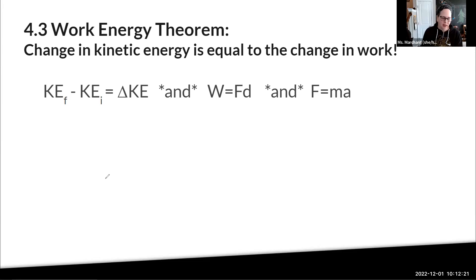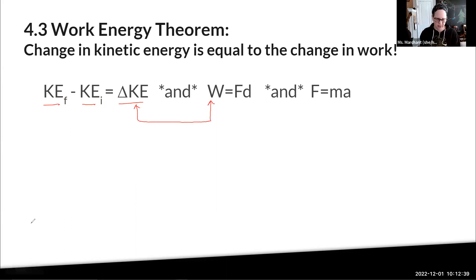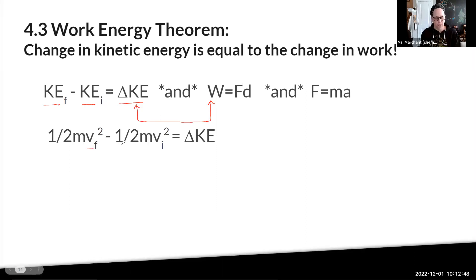Work energy theorem. A lot of this one is going to be adding to that free body diagram by manipulating equations. Kinetic energy final minus kinetic energy initial is your change in kinetic energy. And what we know is the change in kinetic energy is equal to your change in work. So we're going to be able to do a lot of substitutions in there. Here's our change in kinetic energy: one half times the mass times the velocity final squared minus one half times mass times velocity initial squared is your change in kinetic energy.